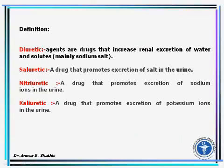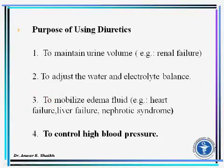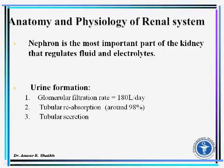Sodium salt: a saliuretic is a drug that promotes excretion of salt in the urine. A natriuretic is a drug that promotes excretion of sodium ions in the urine, and a kaliuretic is a drug that promotes excretion of potassium ions in the urine. The purposes of using diuretics include: to maintain urine volume at a time of renal failure, to adjust water and electrolyte balance, to mobilize edema fluid at the time of heart failure, liver failure, or nephrotic syndrome, and to control high blood pressure.